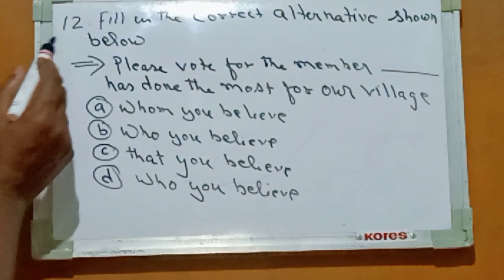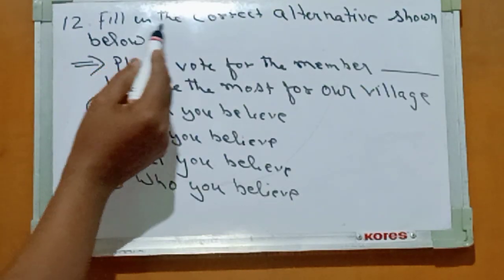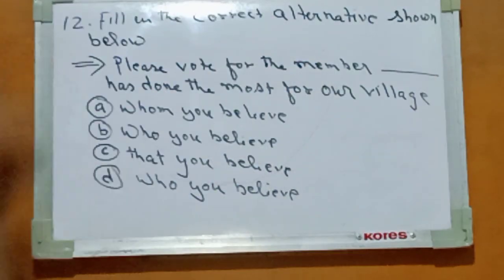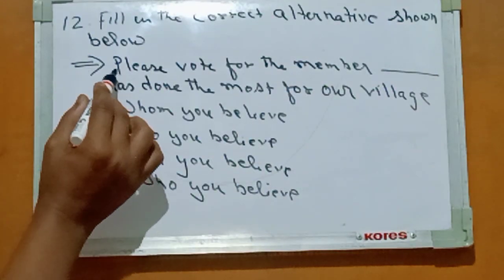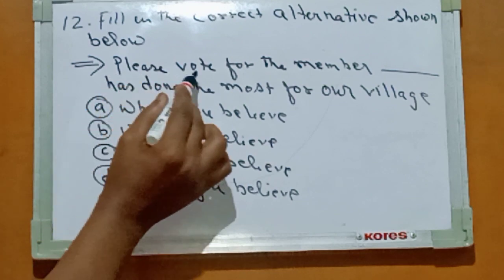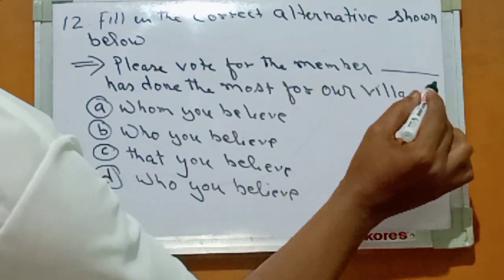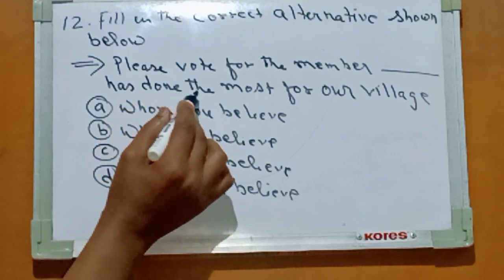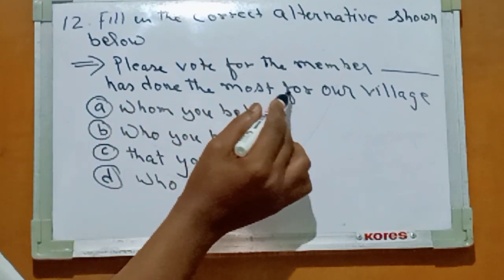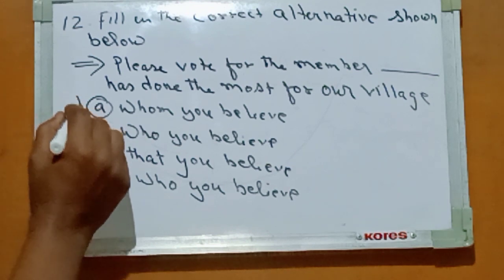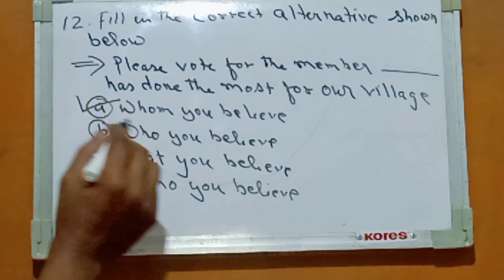Question number twelve: fill in the correct alternative shown below. Please vote for the member that has done the most for your village. The right answer is Option A: who you believe.